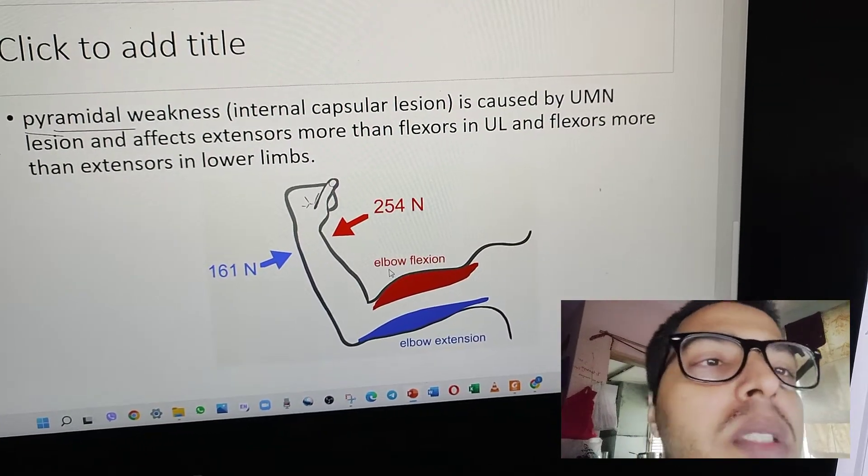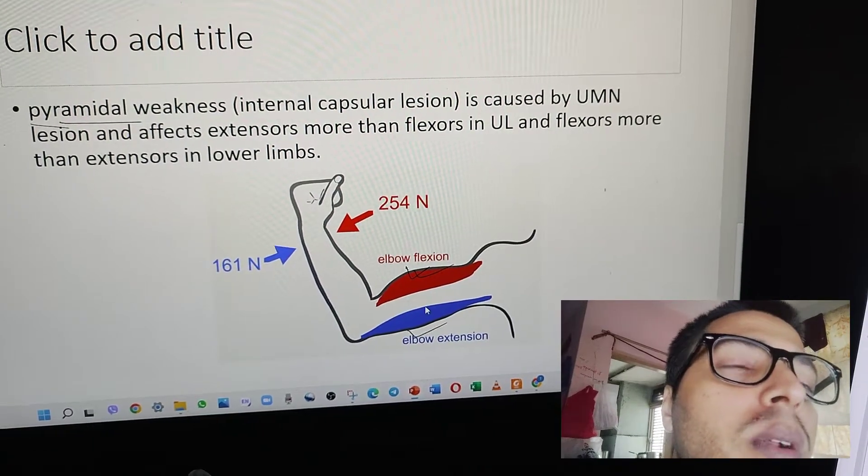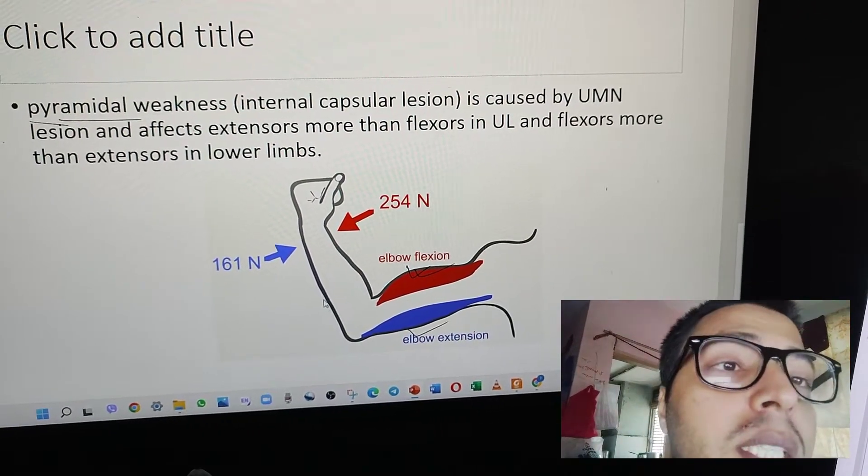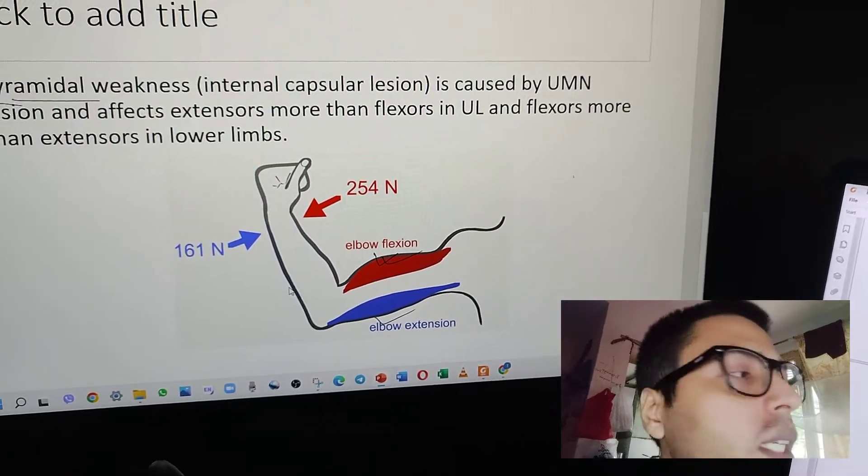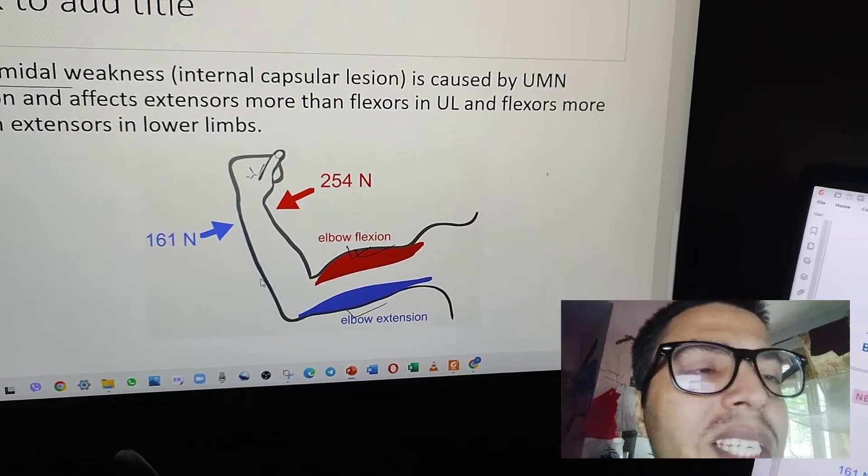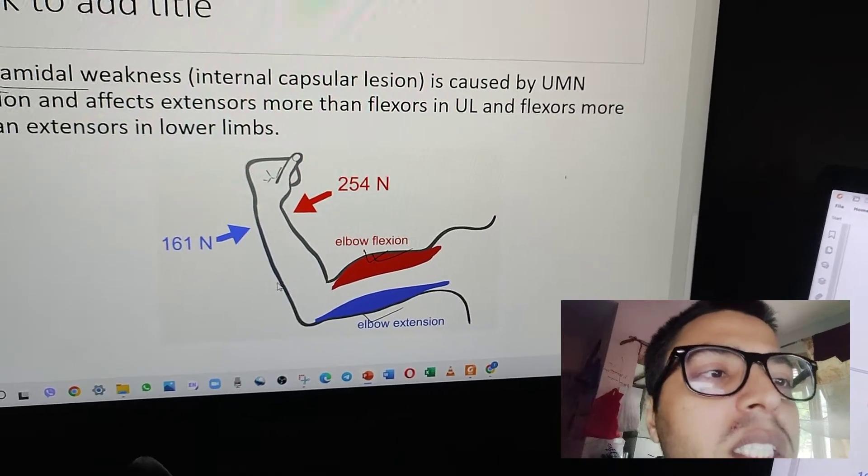In upper limbs, flexors are stronger compared to elbow extensors. You can test your own muscles and check that you use flexors more often than extensors. That's why flexors in upper limbs are more powerful compared to extensors.